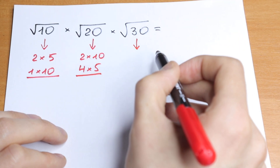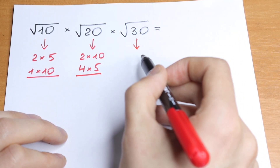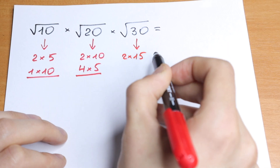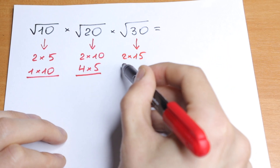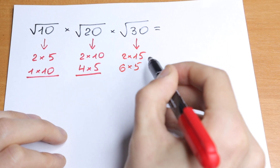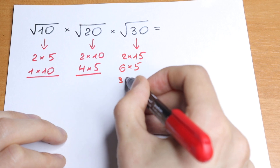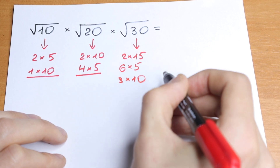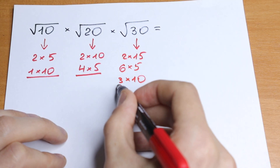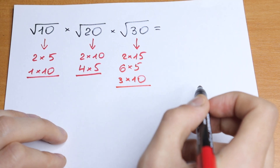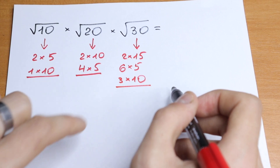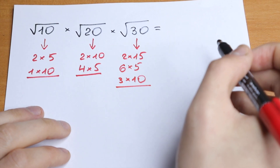And for the last number, we have 30. We can express 30 as 2 times 15, as 6 times 5, and as 3 times 10. In our case, let's express 30 as 3 times 10. I'll show later why I chose this expression.